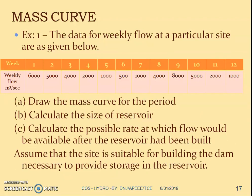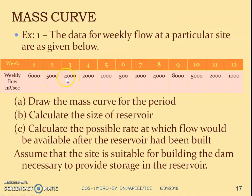We will now go through a small example to understand how to draw the mass curve and calculate the two parameters. The data given is the weekly flow at a particular sample site, presented in a table. In the first week, an average flow of 6000 meter cubes per second is expected throughout the seven days. Similarly, different average flow rates are given for each subsequent week up to week 12, representing the flow from a river or channel at the particular site.